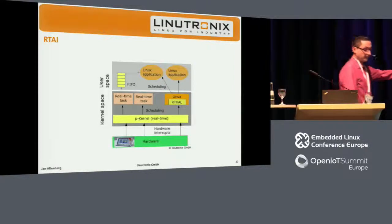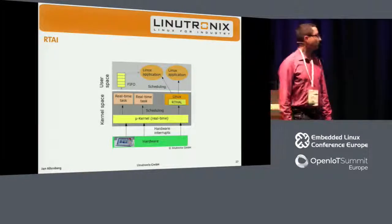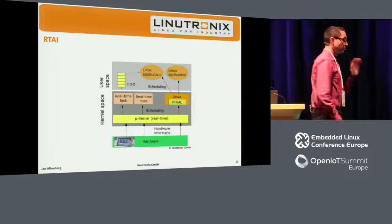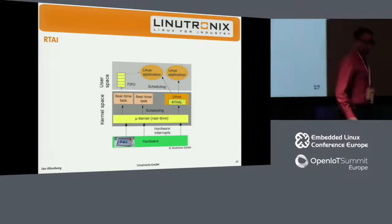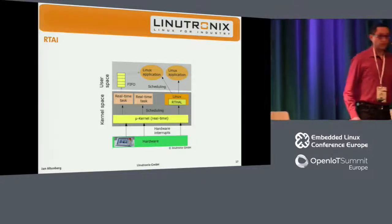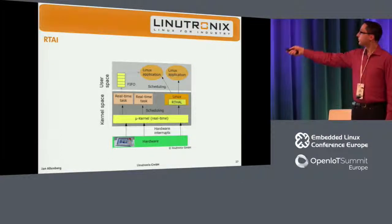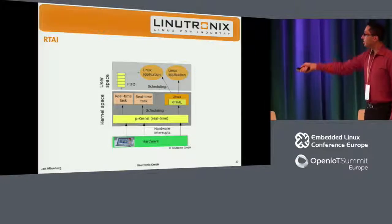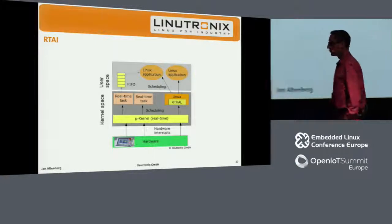If we look into the RTAI design, it basically looks like the classical dual-kernel approach. You can identify the two problems I mentioned about micro-kernels. You've got to maintain this real-time kernel, which is just handling everything related to timing-critical things in the system. And you have to maintain this hardware abstraction layer. Linux is just completely in a different world — the only thing you've got is a simple communication mechanism to synchronize both worlds. It's not real-time in Linux — it's just real-time and Linux in parallel on the same system.